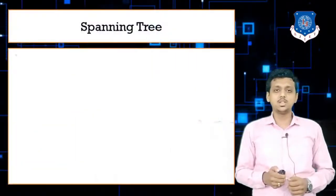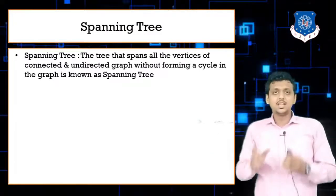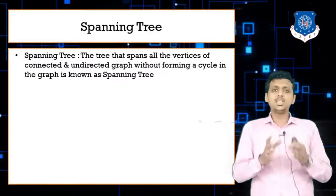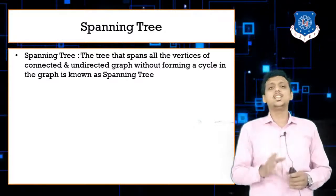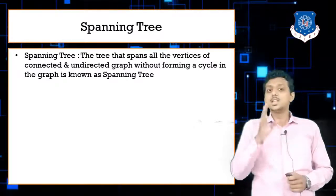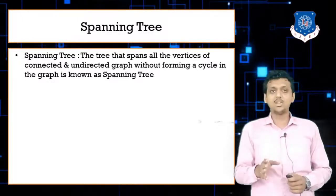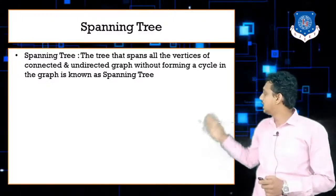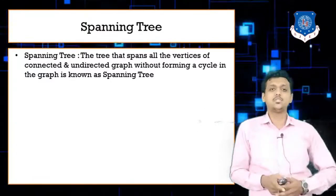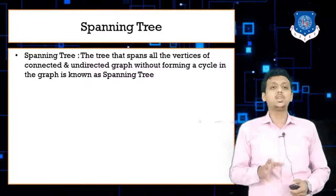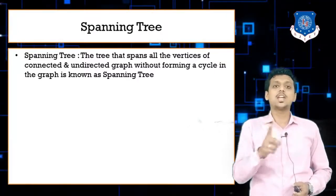The first definition: a spanning tree is a tree that spans all the vertices of a connected and undirected graph. Spanning tree is for the undirected connected graph. When a tree spans all the vertices of a connected and undirected graph, that is known as a spanning tree. Make sure there is no cycle, there is no closed path in a spanning tree.